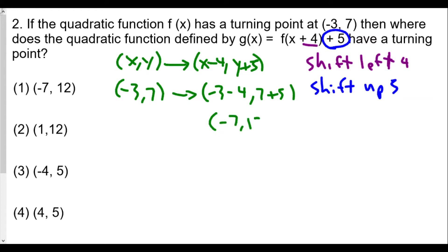Our new turning point or vertex will be (-7, 12), and that's going to be choice one. So we identify what type of translation is occurring here and then apply that translation to the turning point or vertex of this function.